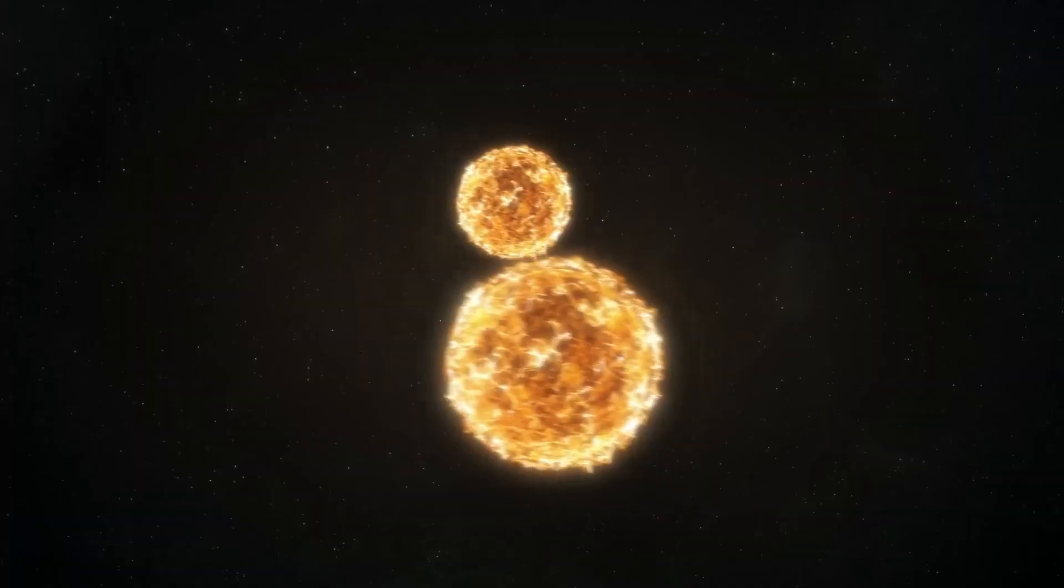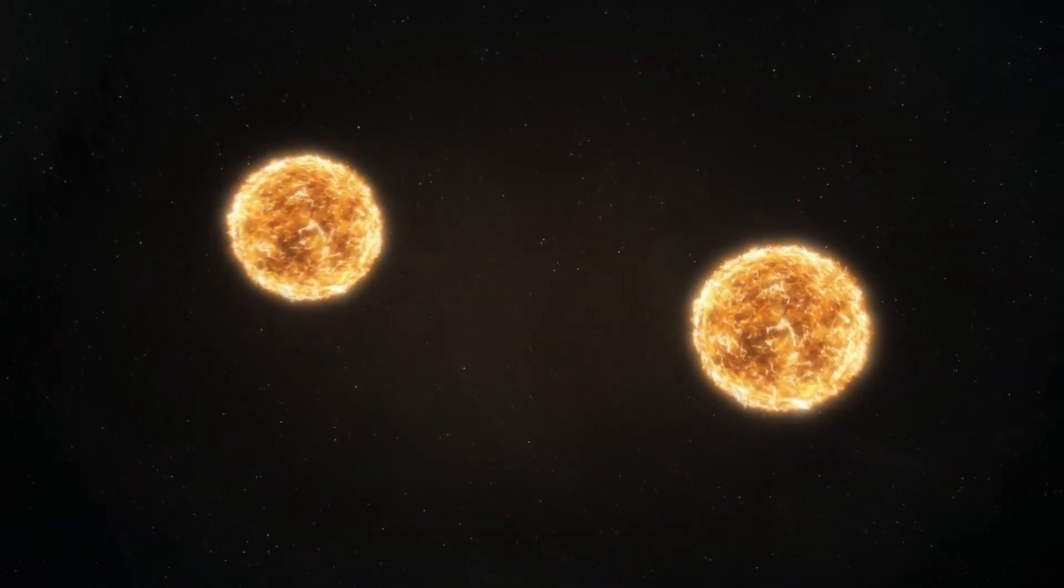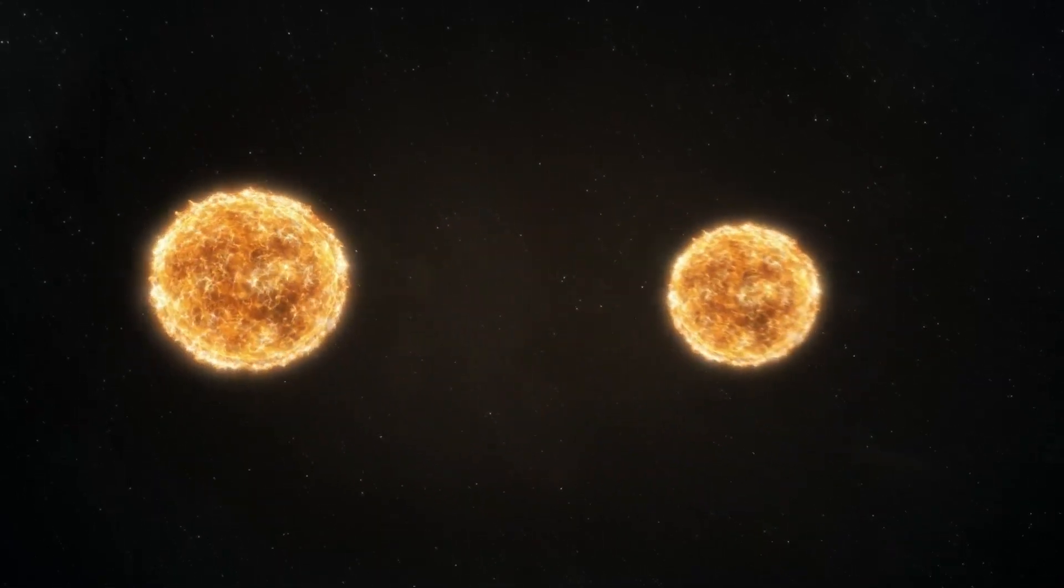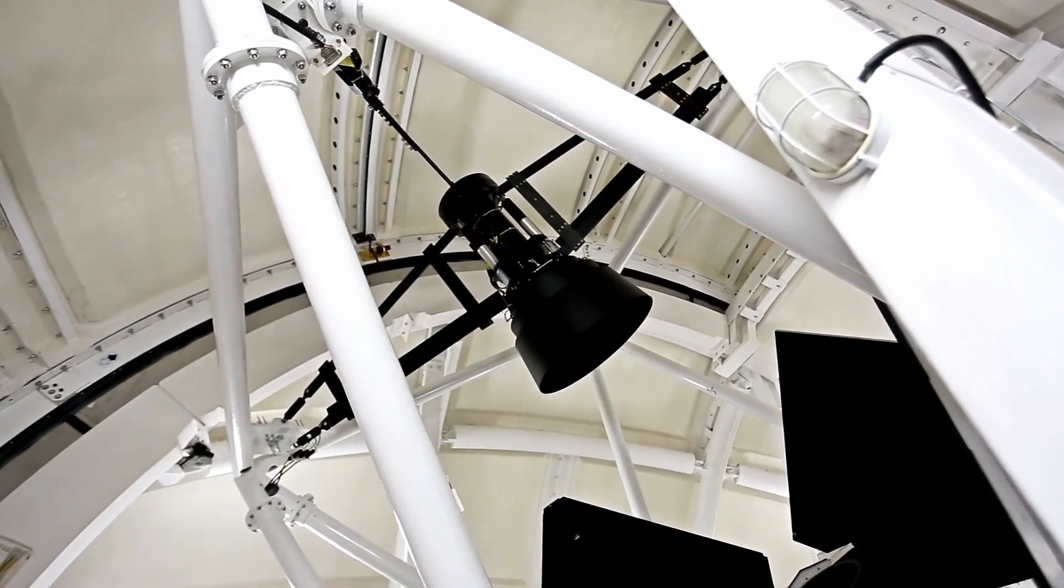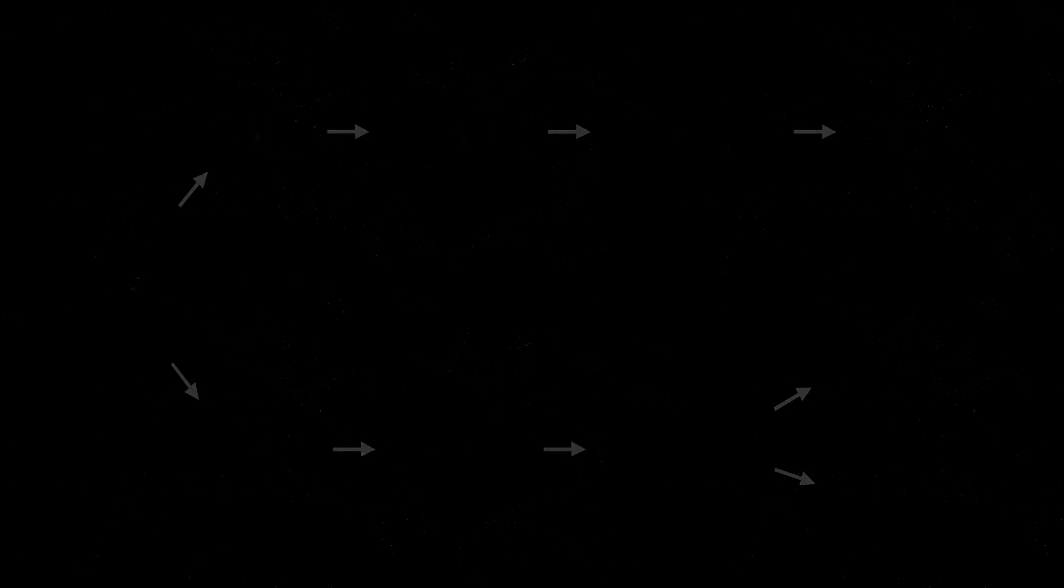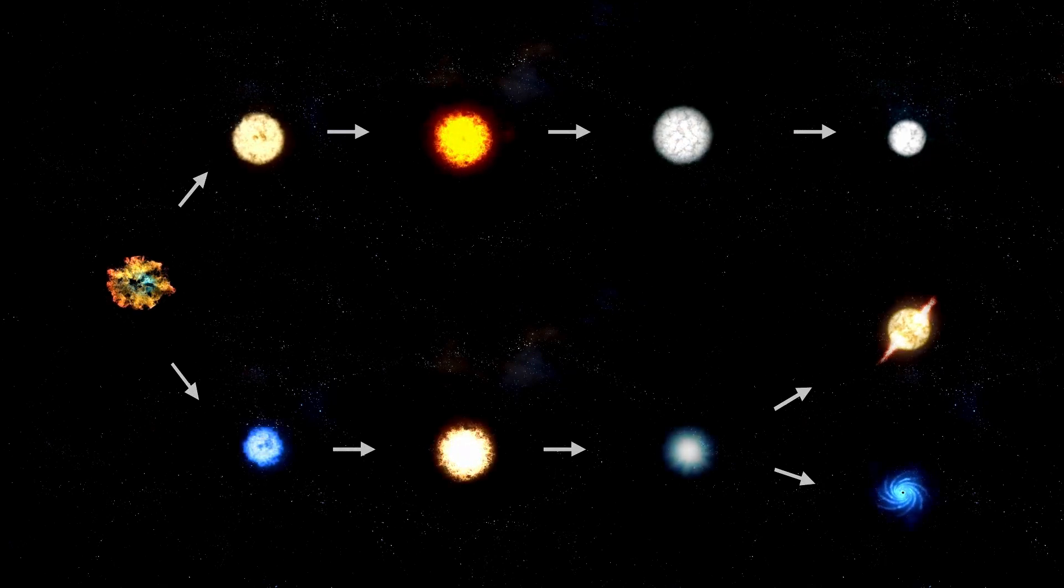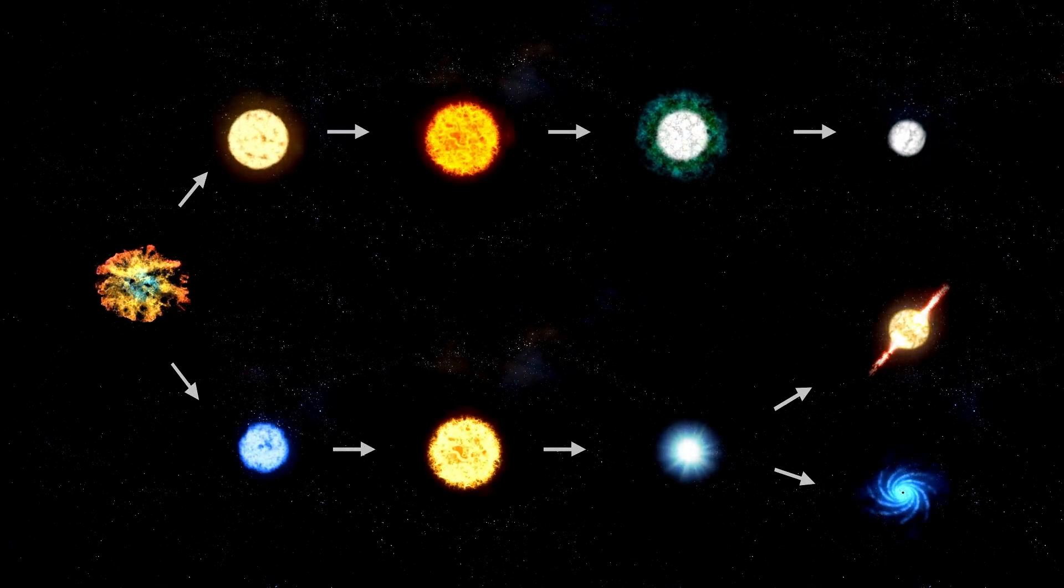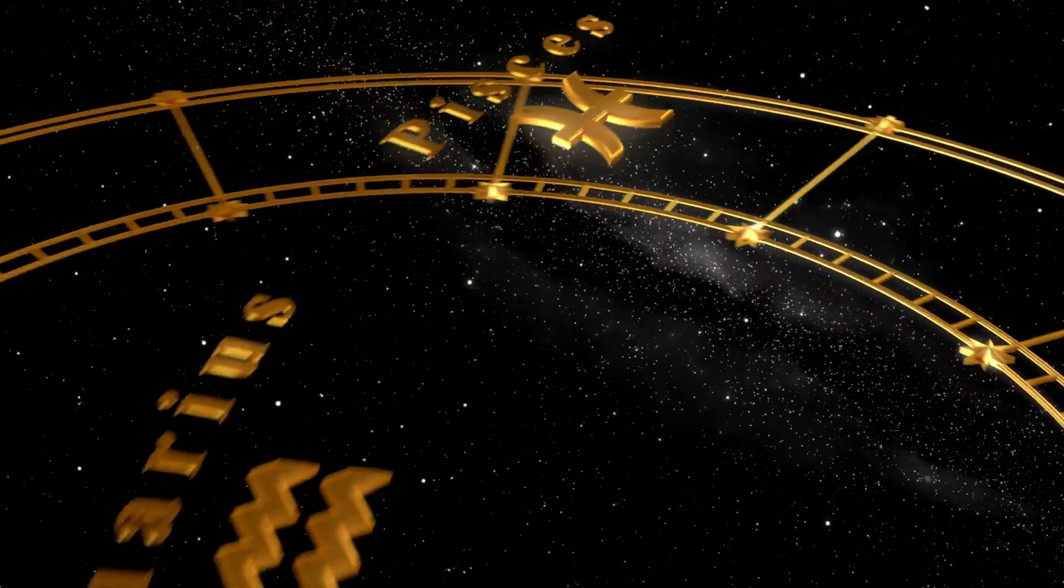Spectroscopy, on the other hand, analyzes light across various wavelengths, offering insights into the star's temperature, motion, and chemical composition. When combined with powerful computer models incorporating fluid dynamics, thermodynamics, and fusion physics, these observational tools allow scientists to simulate Betelgeuse's interior and anticipate future developments.